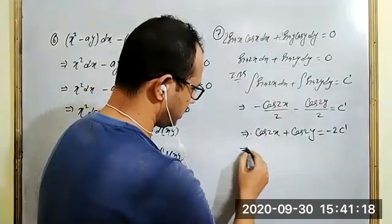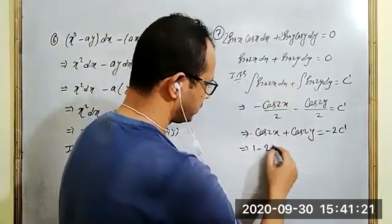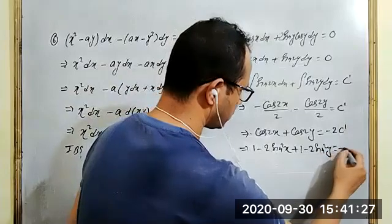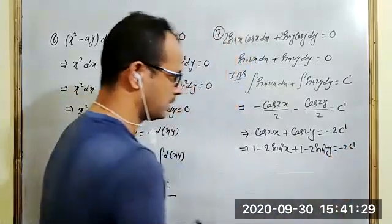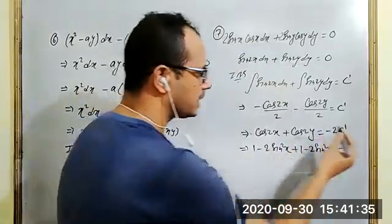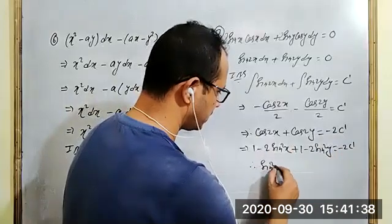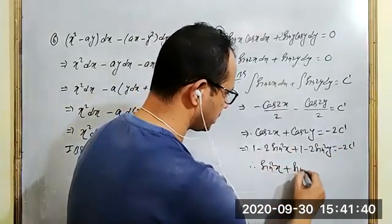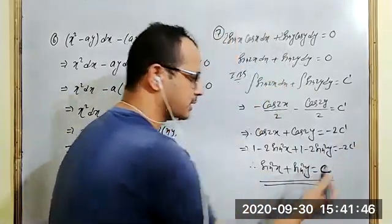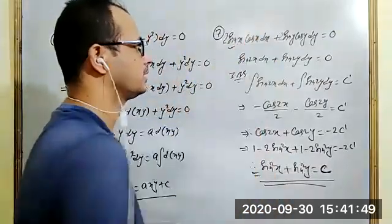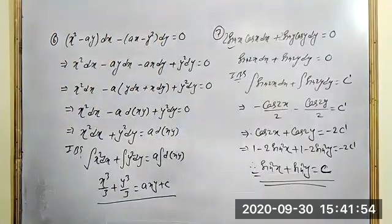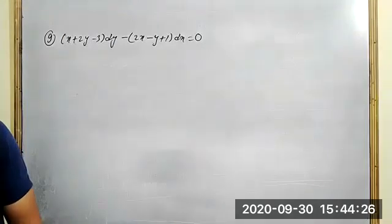We have minus cos 2x by 2 minus cos 2y by 2 equal to constant. Taking minus 1 by 2 common, we get cos 2x plus cos 2y equal to minus 2 c dash.